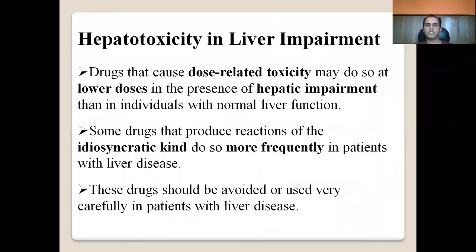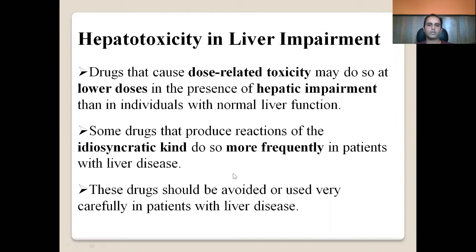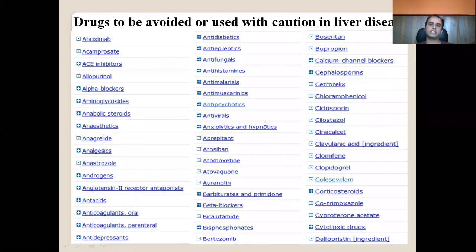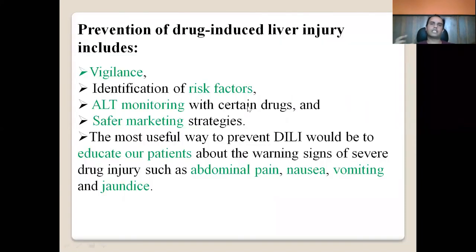In patients with existing liver impairment, the chance of further hepatotoxicity increases. Drugs causing dose-related toxicity may do so at lower doses in cases of hepatic impairment, and idiosyncratic reactions may occur more frequently. These drugs should be avoided or used very carefully in patients with liver disease. For hepatotoxicity information, LiverTox and the BNF are both good references. Regarding prevention, identification of risk factors is most important, along with ALT monitoring for certain drugs and effective post-marketing surveillance strategies.